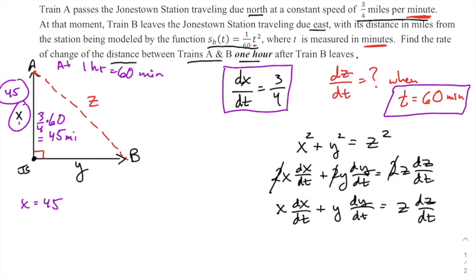Y—this distance is given to me by that function. So y is going to be s_b of 60 minutes. So (1/60) of t², so (1/60) of 60². Which works out kind of nicely—you can just take away one of the 60s and that means y is 60 miles.